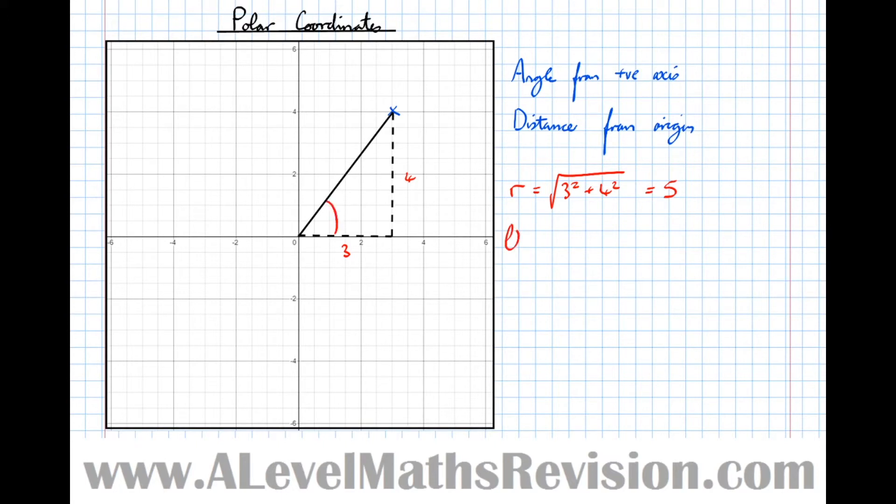The angle theta made with the positive x-axis, or as it's known in polar coordinates the initial line (i.e. the line where theta equals 0), is given again just by using trigonometry. So it's the arctan of the opposite over adjacent.